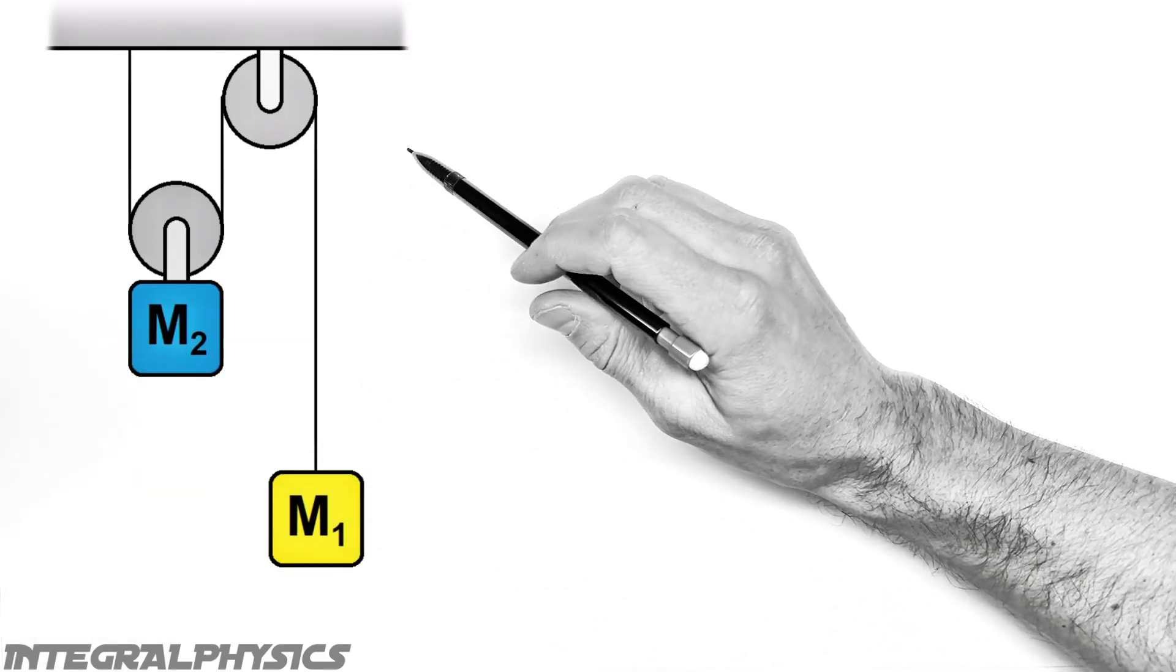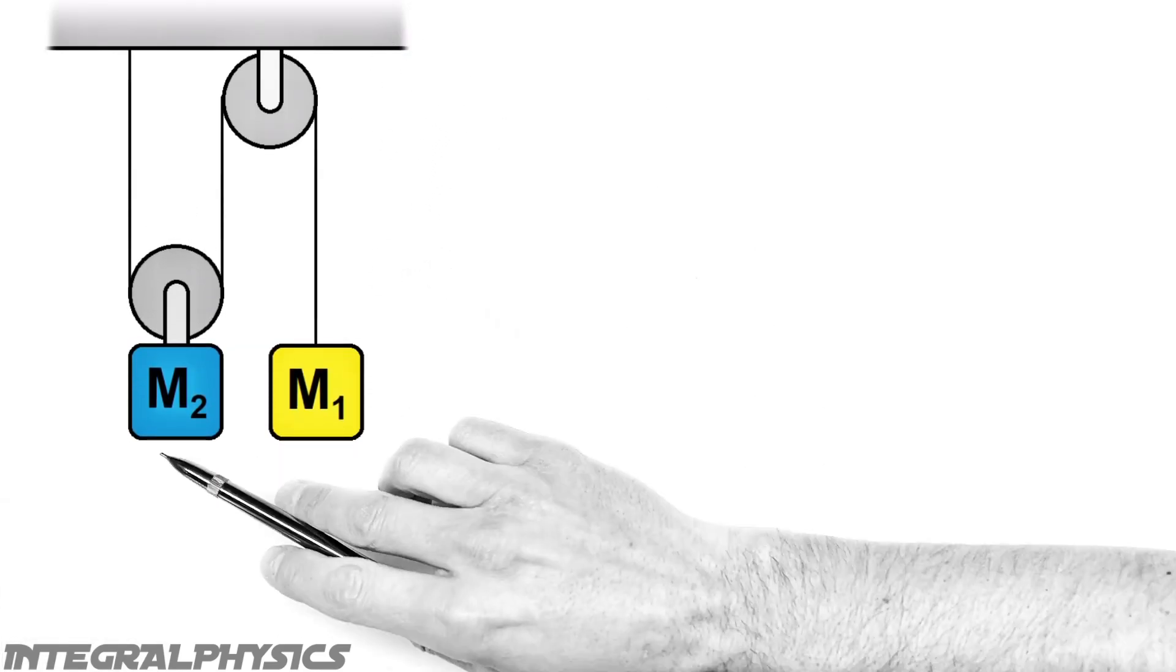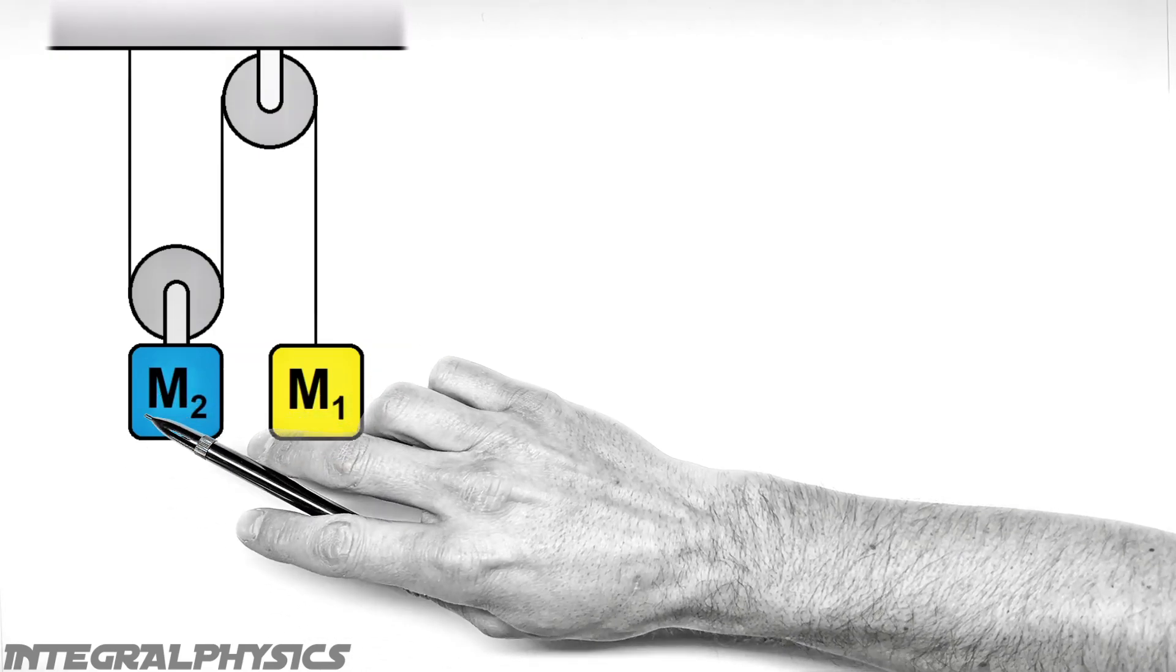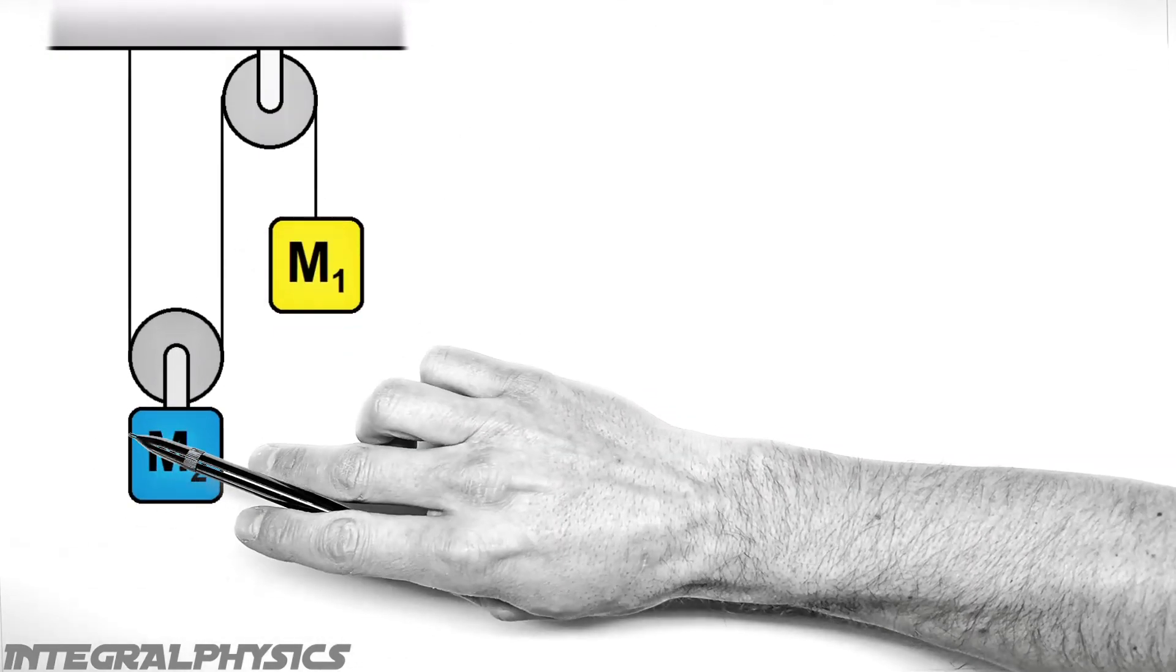Now one of these pulleys is attached to a fixed surface up here like a ceiling, but the other pulley is attached to this moving block, which means as the block moves up and down the pulley is going to move with it.